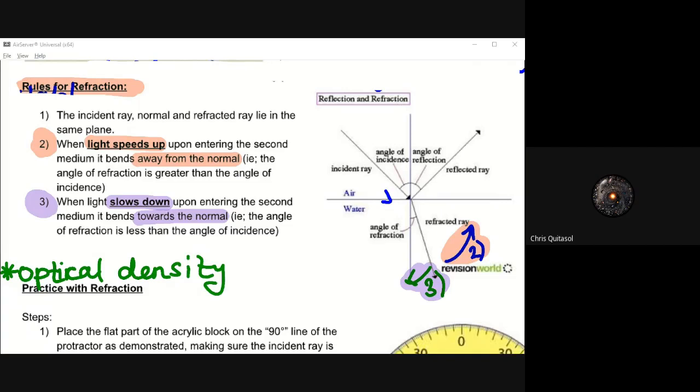Now, you might be asking to yourself, well, how do we know if light speeds up or slows down? We get into that a bit more tomorrow. But as you can imagine, less dense objects, less dense mediums, sorry, they will allow for light to speed up. More dense mediums allow for light to slow down. But that's something we can kind of get into a little bit more with tomorrow's lesson. Because at the end of the day, these rules for refraction are the main takeaway that I want you to have for this lesson.